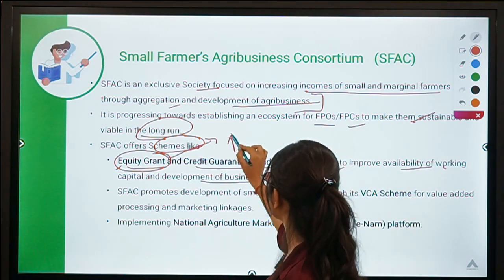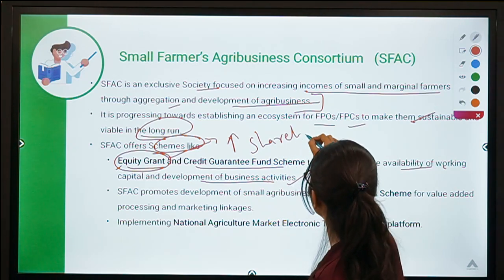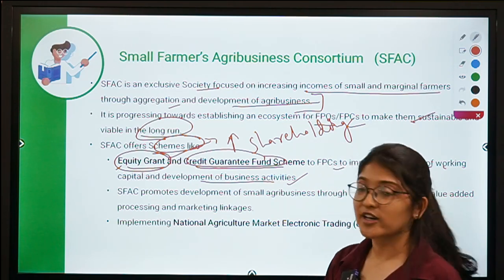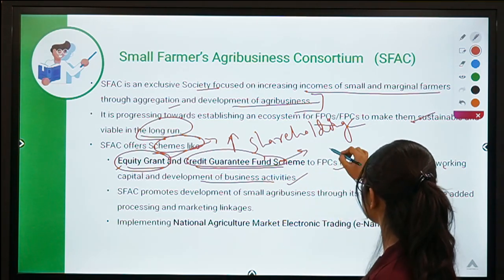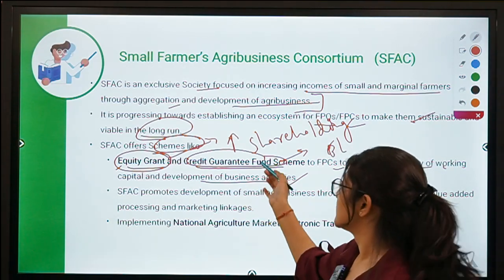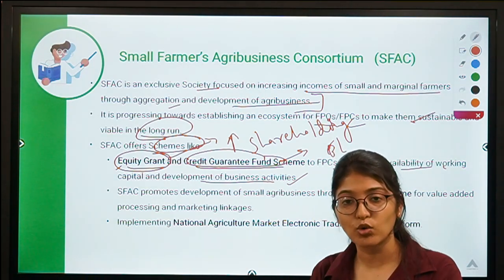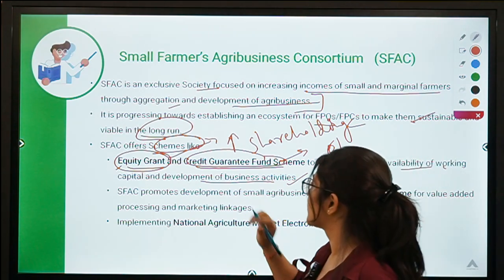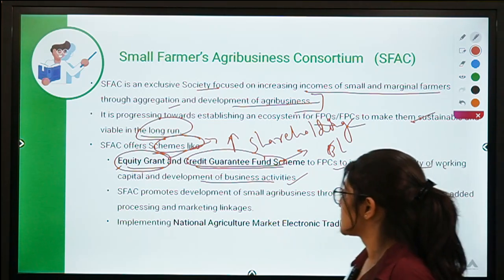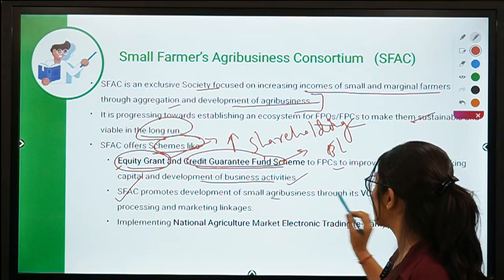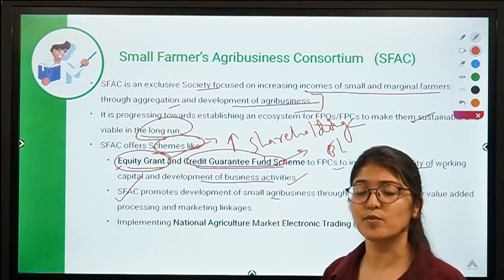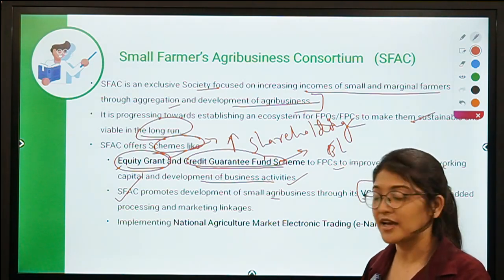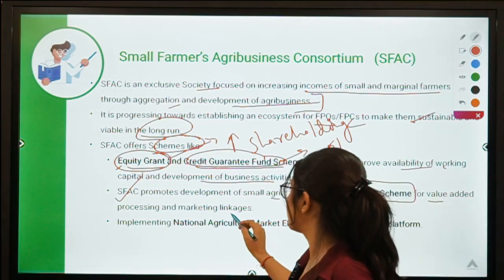The equity grant component helps improve the ability of FPOs. The second part is the Credit Guarantee Fund Scheme — eligible lenders provide credit, and SFAC provides guarantee for those loans. So there are two components: equity grant and the credit guarantee fund. The second scheme under SFAC promotes development of small agri businesses through the VCA scheme — Venture Capital Assistance — which is a loan-based assistance to meet the shortfall in capital requirement while implementing agri projects, for value-added processing and marketing linkages.